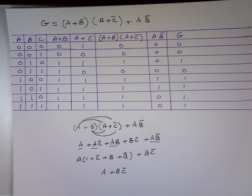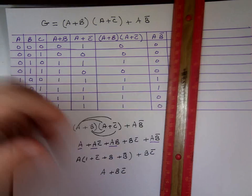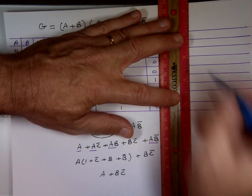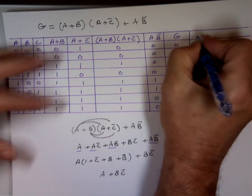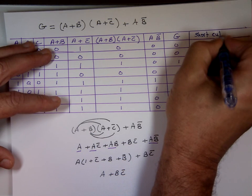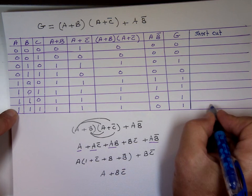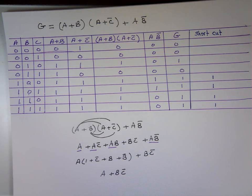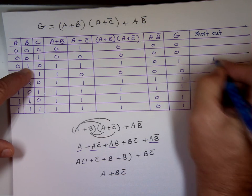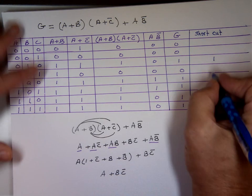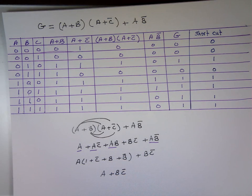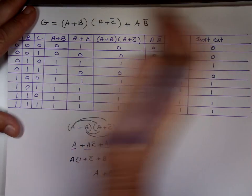So here's the answer using the shortcut method. The simplified function says you'll have a value of one when A is one — that covers the last four rows. You're also going to have a value of one when B is one and C is zero — that picks up two additional rows. Notice how quickly we came up with the table. But for this homework they only want you to do it the long way.